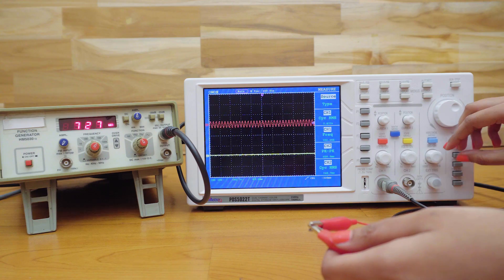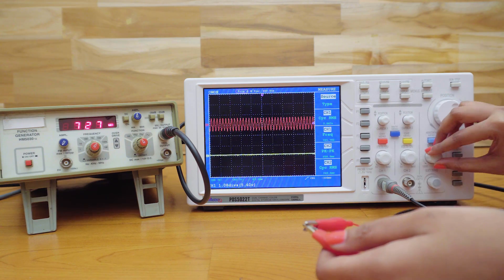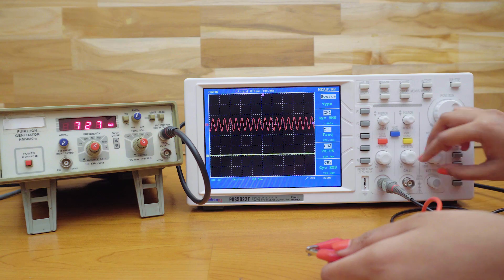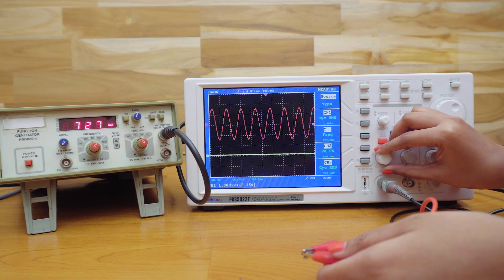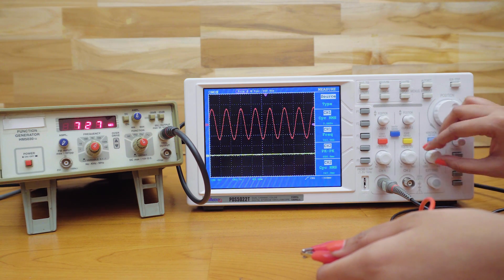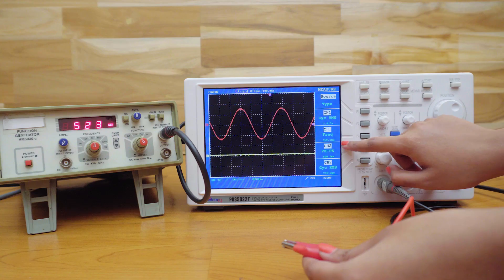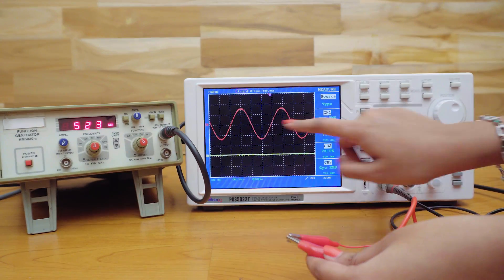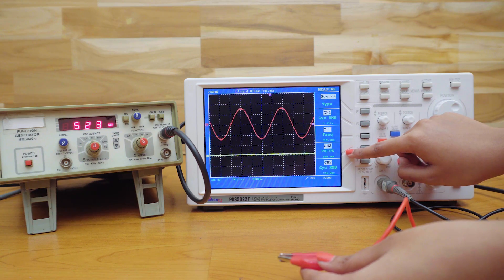The sine wave is displayed on the screen. Let me just adjust it so that we can see it clearly. Now, we can calculate the parameters of the signal either manually or using the measure function. You can see that the frequency on the oscilloscope matches with that of the function generator and the voltage is displayed here.